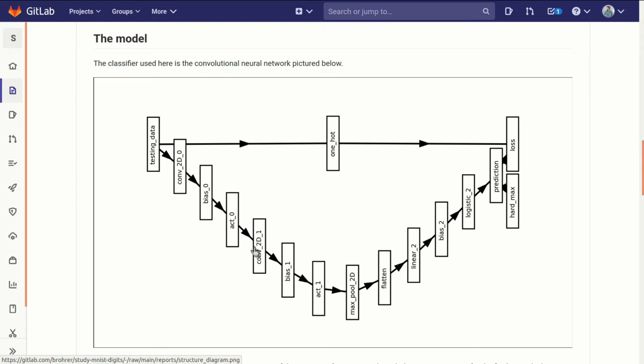Then another convolution layer, another bias layer, another hyperbolic tangent, and then a max pooling layer, which shrinks that image down, flattens it.